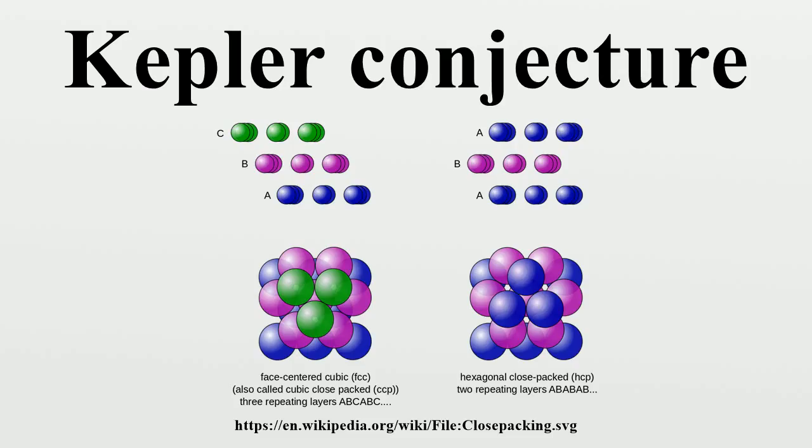The Kelvin problem: What is the most efficient foam in three dimensions? This was conjectured to be solved by the Kelvin structure, and this was widely believed for over 100 years, until disproved by the discovery of the Weaire-Phelan structure. The surprising discovery of the Weaire-Phelan structure and disproof of the Kelvin conjecture is one reason for the caution in accepting Hales' proof of the Kepler conjecture.